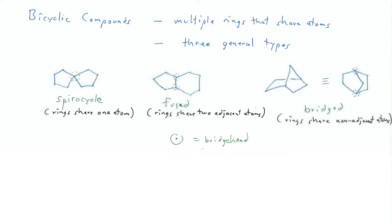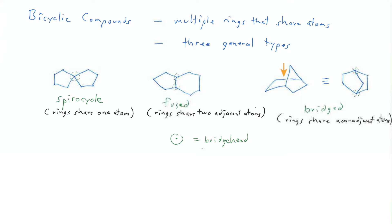The third kind of bicyclic compound is a bridged bicycle. Here the shared atoms have to be non-adjacent atoms. Bridged bicycles can look unusual because of the way we draw them. If you look at the structure, there's a bond in the back — a horizontal bond with white space around it. What that's depicting is that bond is spatially behind this vertical bond that passes in front of it. Without that white space, it would look like an intersection, and in a skeletal structure an intersection means there's a carbon there — and there is no carbon there.